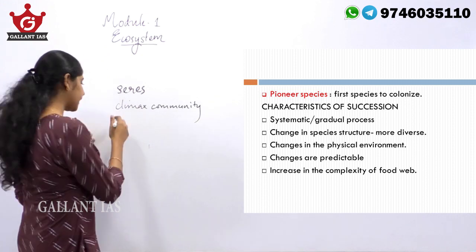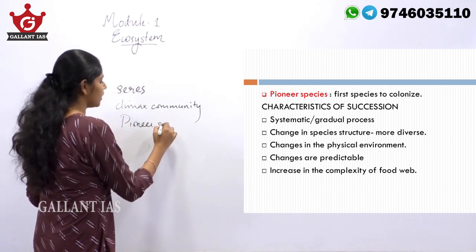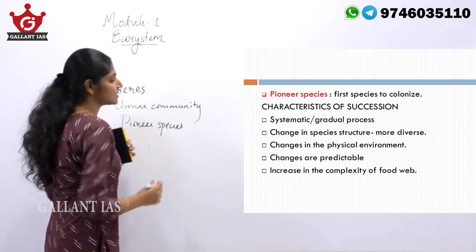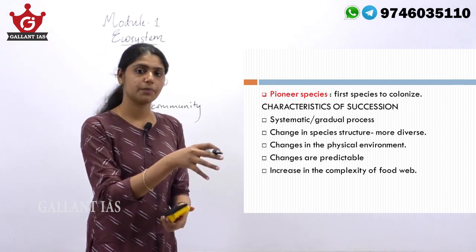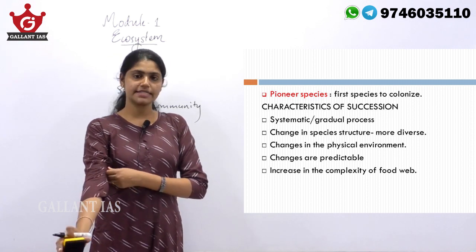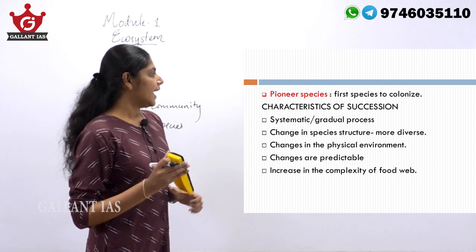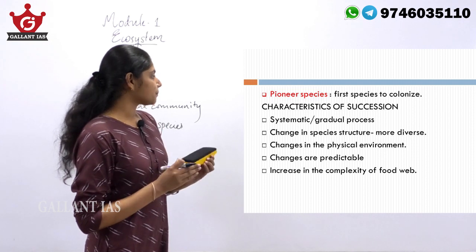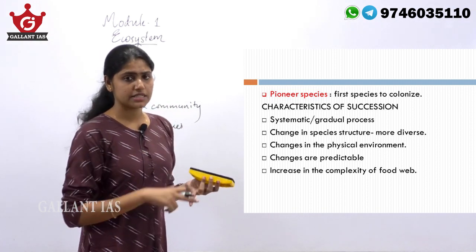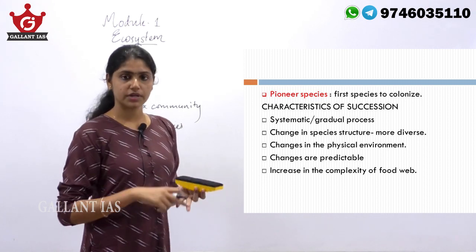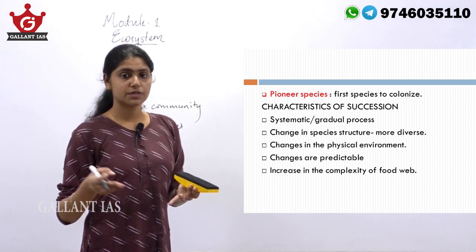Another key term is the pioneer community or pioneer species — the first community or first species to occupy or colonize that area is known as the pioneer species. The characteristics of succession include that it is a gradual and progressive process, with changes being observed throughout.